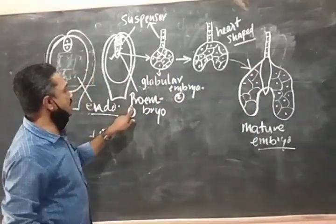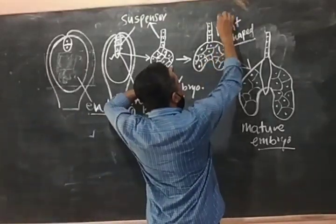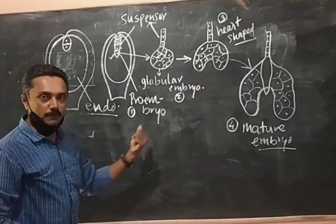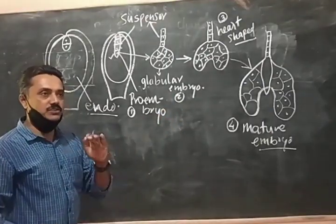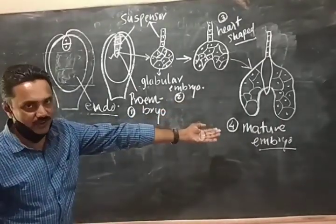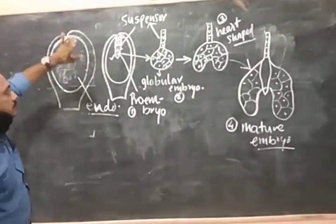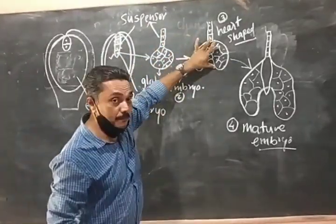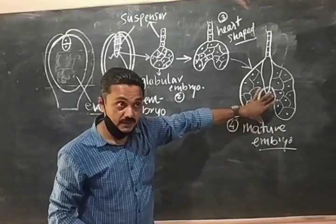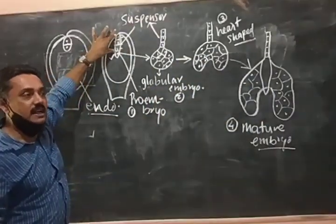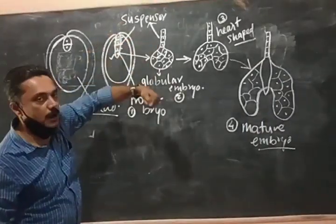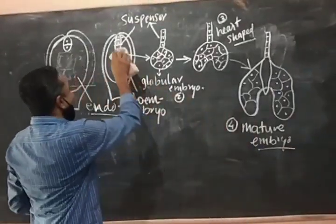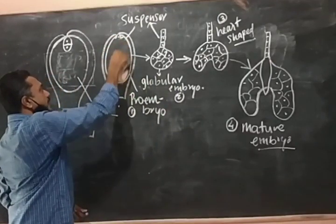The fourth stage is the mature embryo. We are discussing dicot and monocot embryo development — they have similar overall development but differ in structure. The zygote divides into cells forming the proembryo, then globular embryo, then heart-shaped embryo, then embryo proper. The remaining cells act as the suspensor, which pushes the embryo into the endosperm as it reaches maturity.